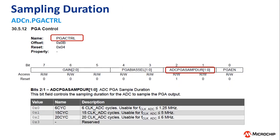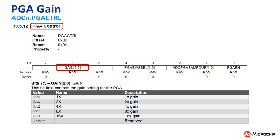When the PGA is used, it is sampling continuously and is only placed in the hold state when the ADC is sampling the PGA. The ADC PGA sample duration depends on the ADC clock and is configured in the PGA control register. The PGA gain is configured in the same register and allows for 1, 2, 4, 8, and even 16 times gain.